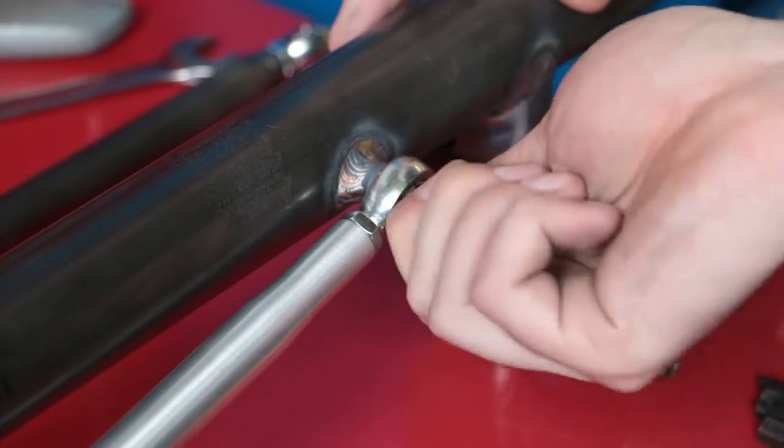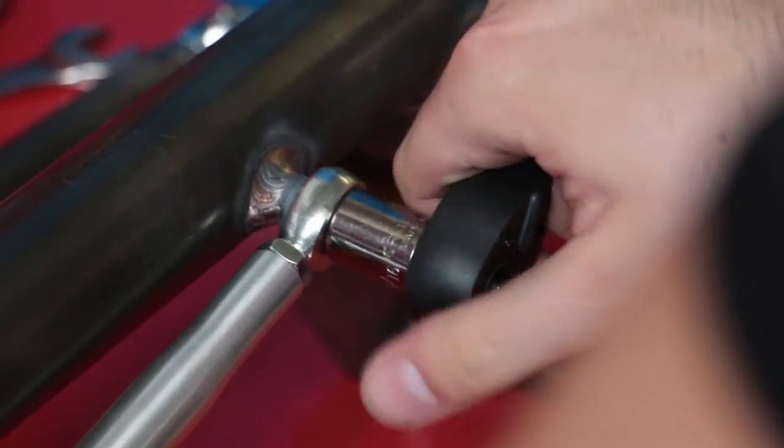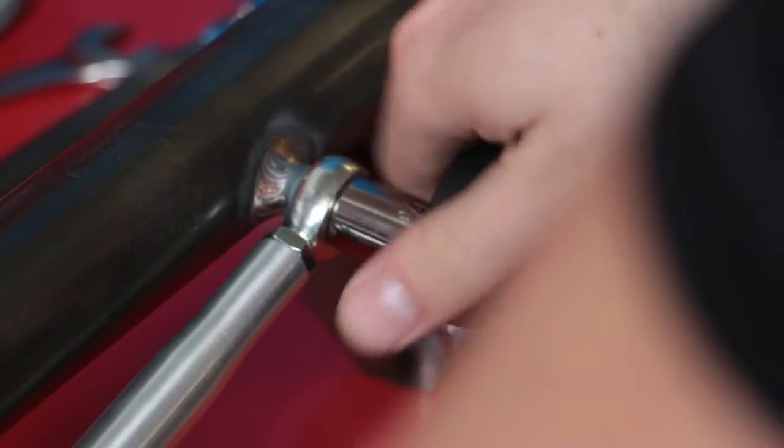Attach panhard rod to welded stud on the front of the axle using a ⅜ inch nylock nut found in your front axle hardware kit.